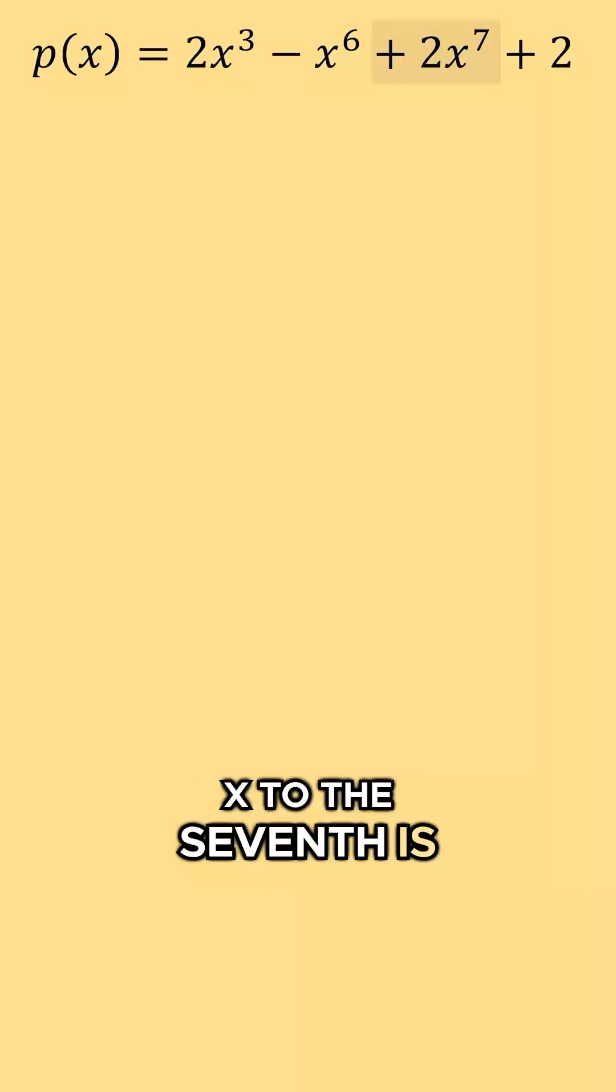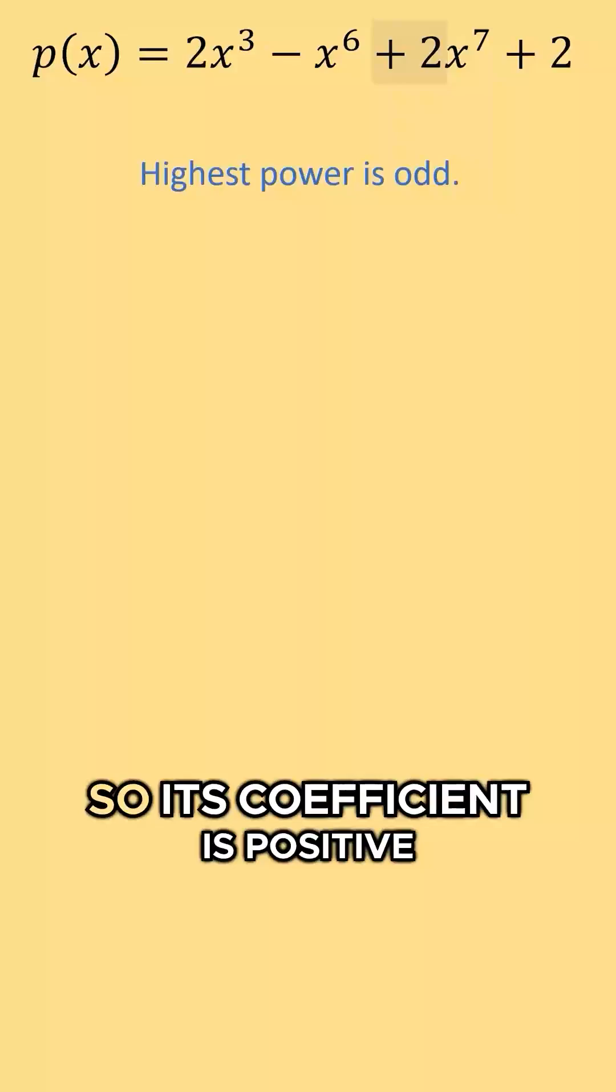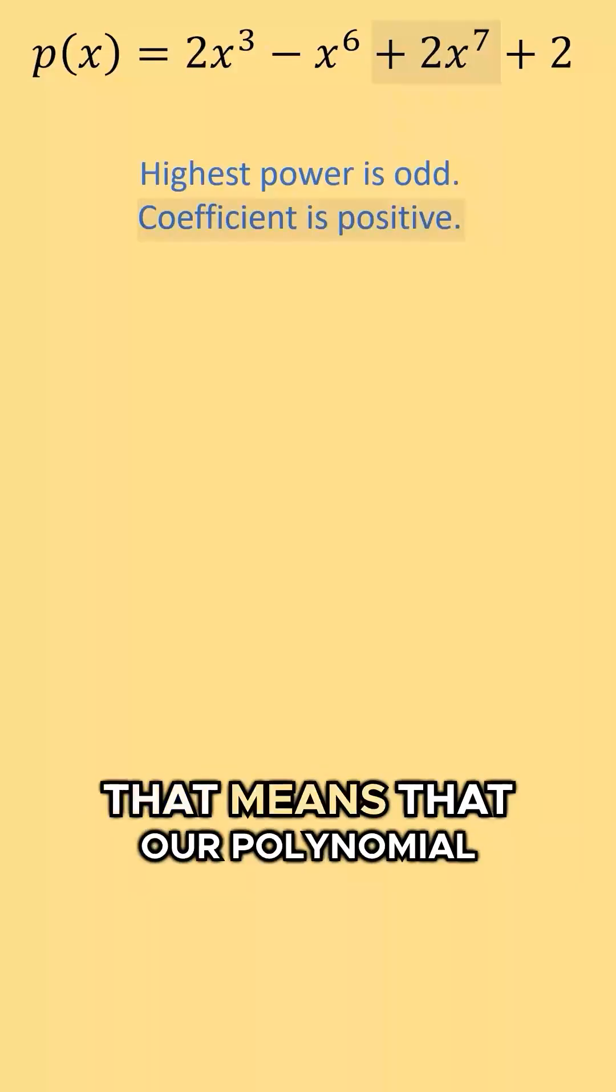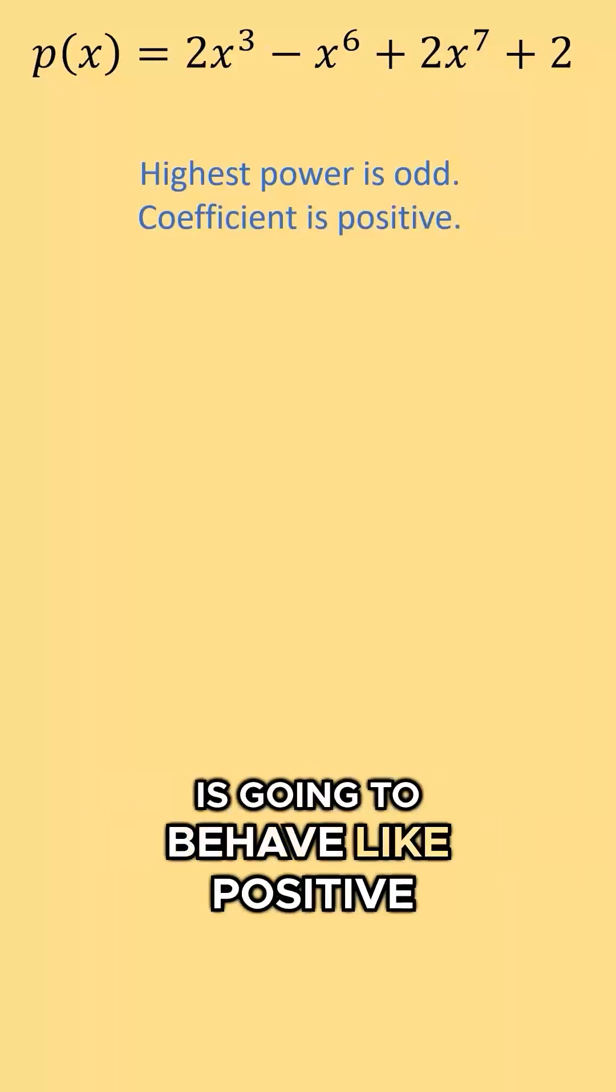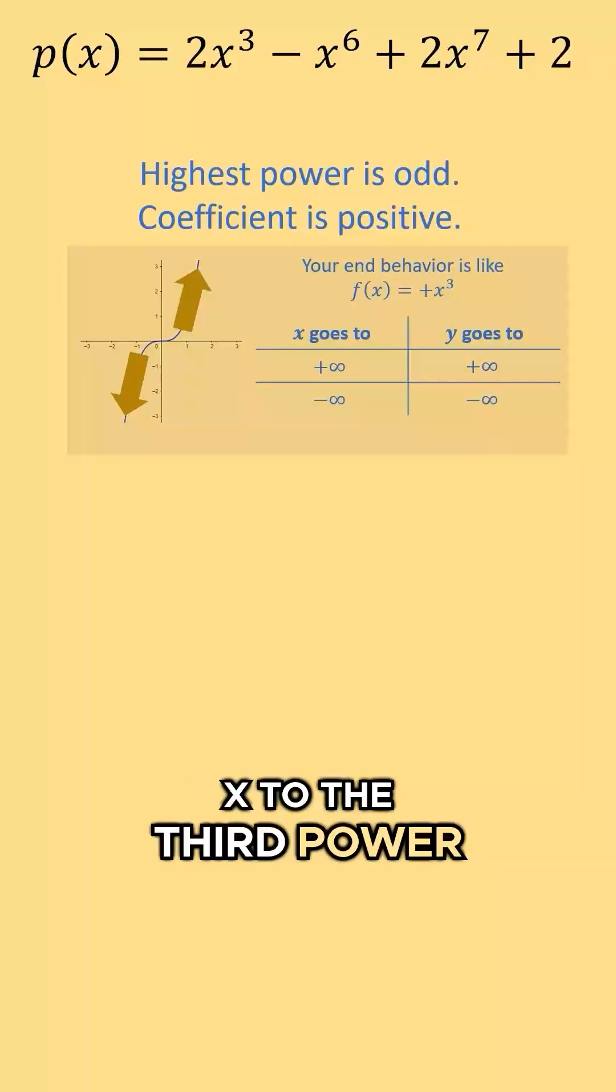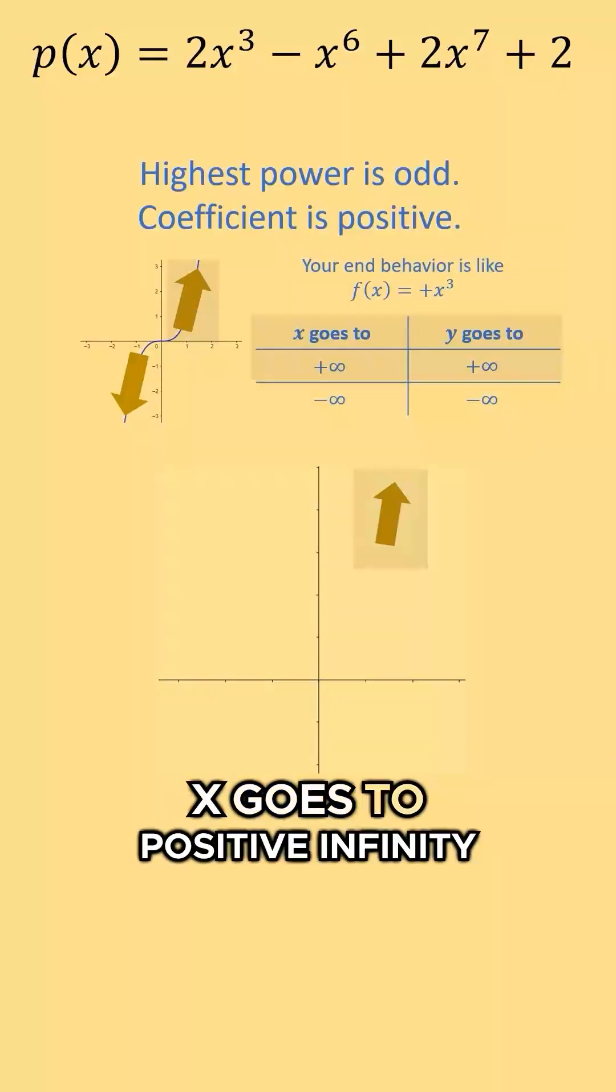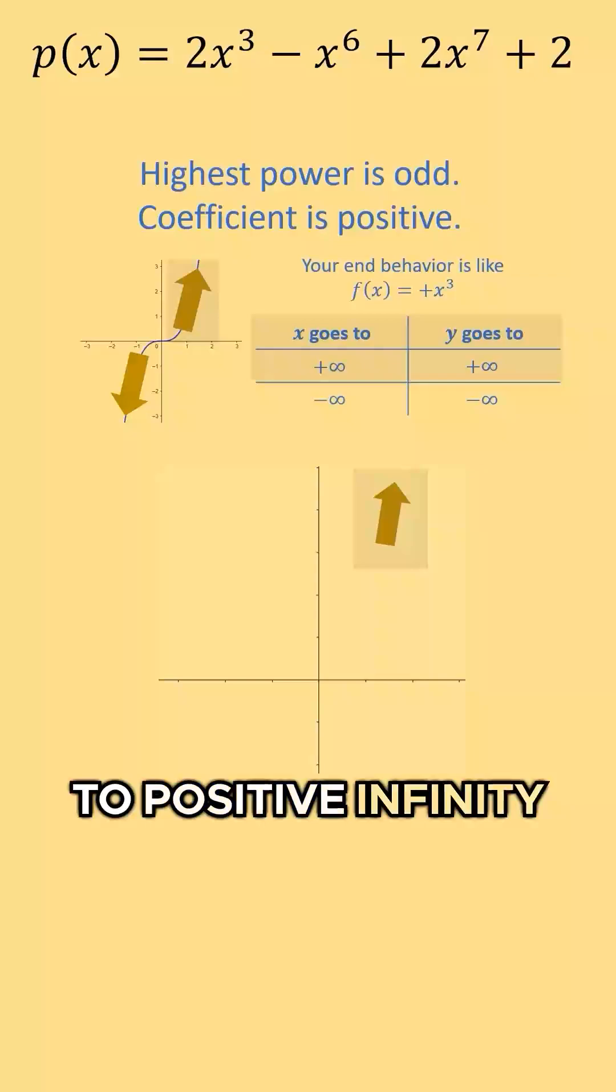x to the seventh is an odd power. Its coefficient is positive two. That means our polynomial behaves like positive x to the third power, which means as x goes to positive infinity, y goes to positive infinity.